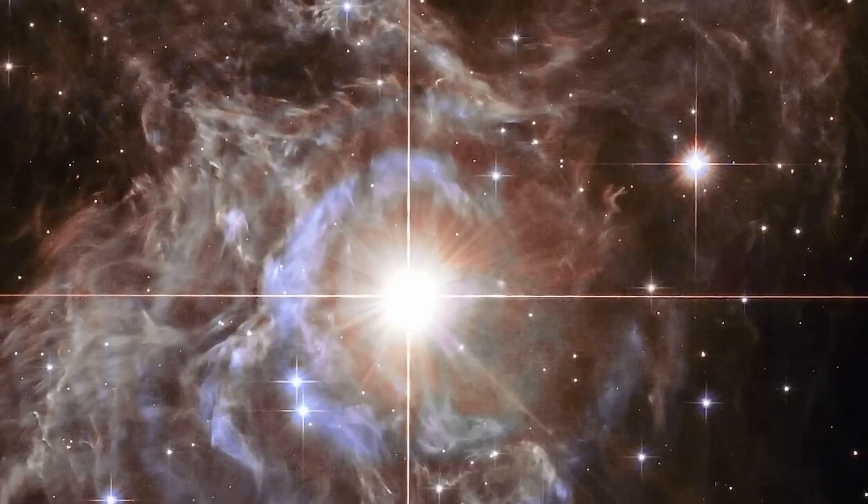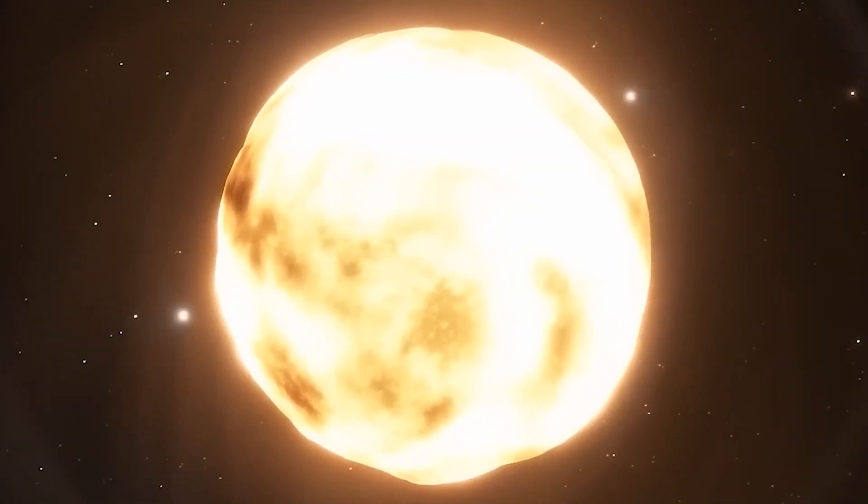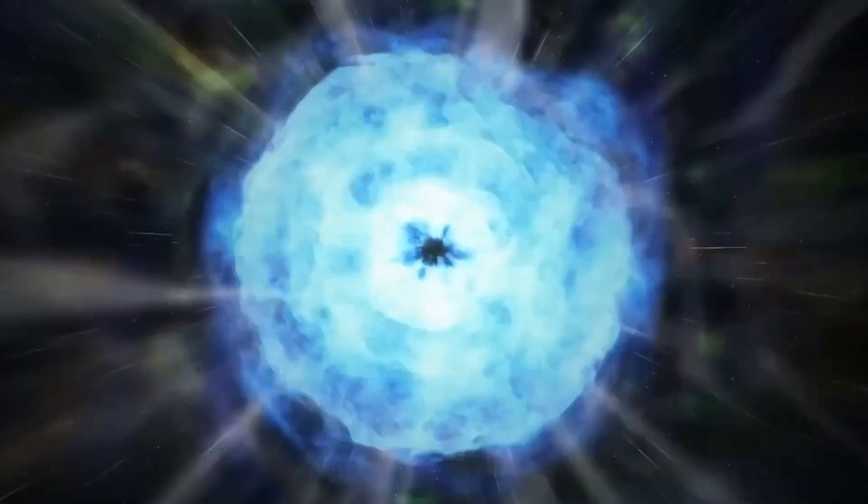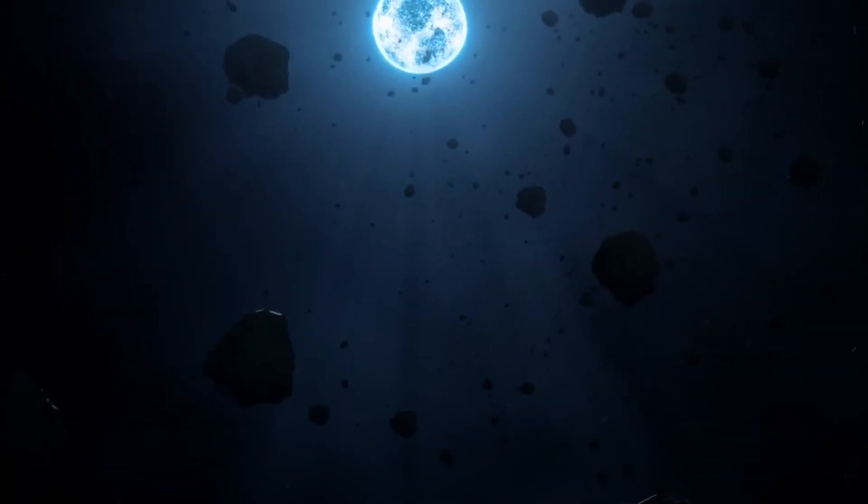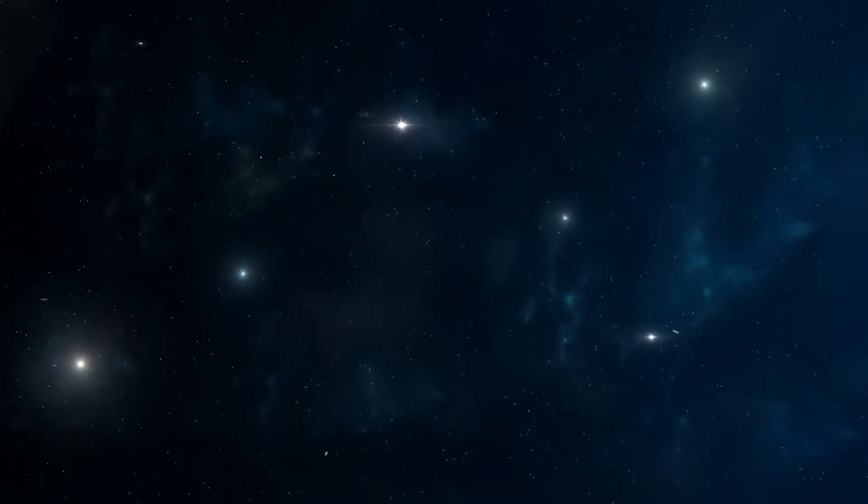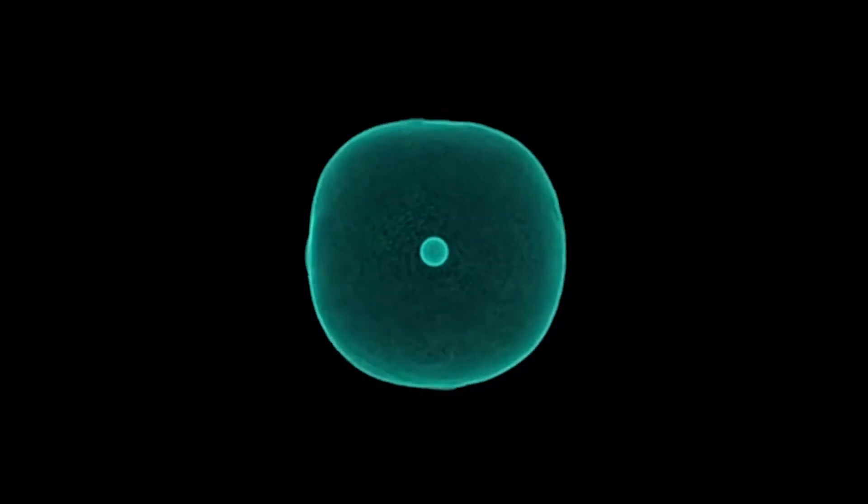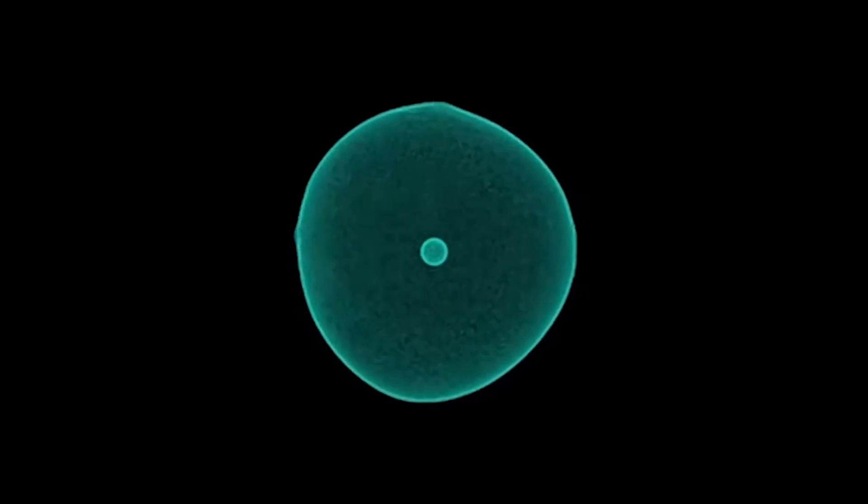This phase sees a dramatic increase in energy output before reaching a catastrophic explosion. If Polaris were to experience a supernova, we would surely witness an amazing event in our sky. The star would become incredibly luminous, eclipsing even the brilliance of the moon and becoming one of the brightest objects in the night sky. This luminous spectacle could last for days, weeks, or even months.